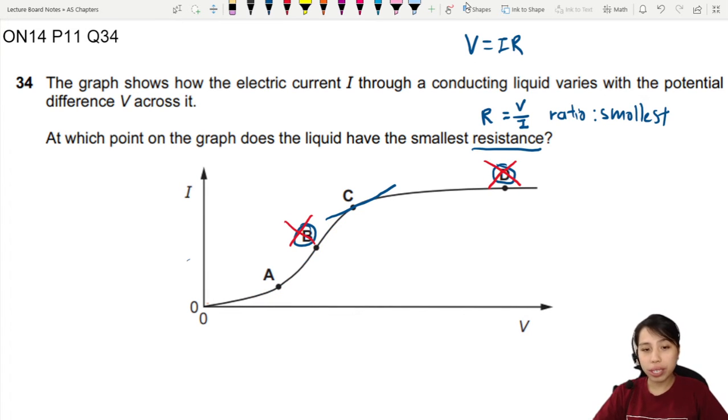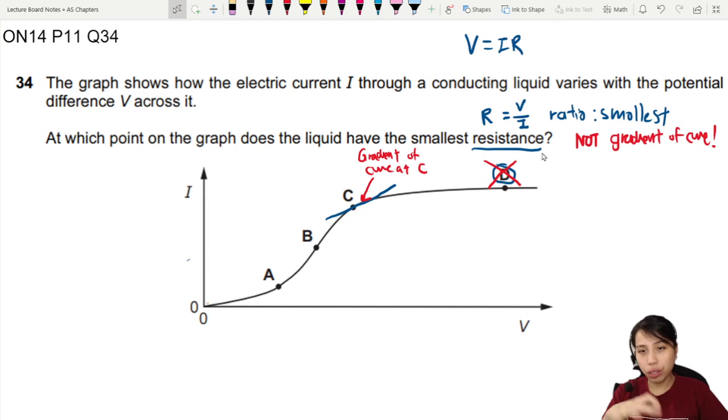Because what we just draw here, for example, at C is a gradient of the curve. Or rather, gradient of the curve at C, tangent to the curve at C. So this ratio that we look at, R equals V over I, is actually not the gradient of curve. There are two different things because this is not a straight line.